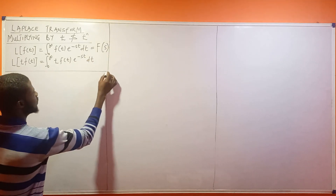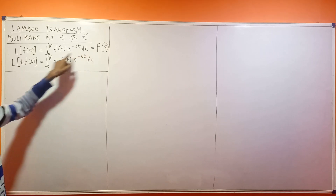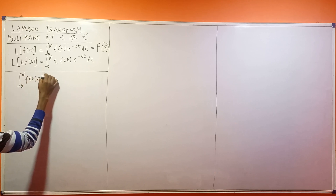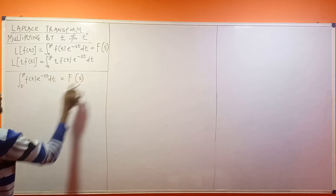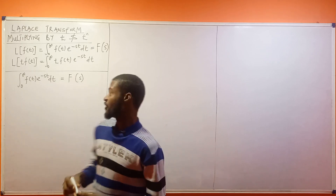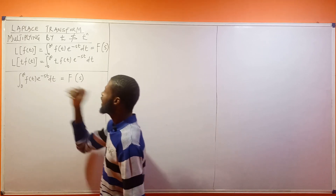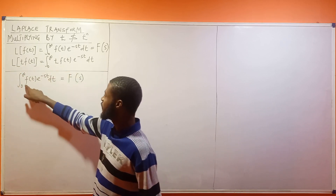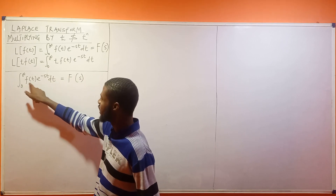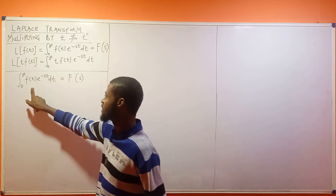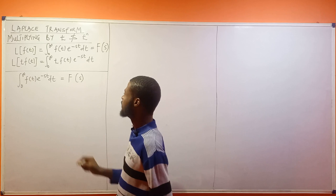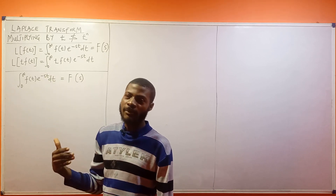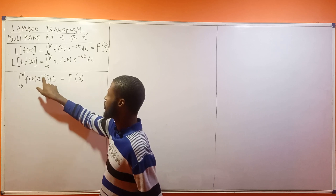Let me rule a line here. We have the integral from zero to infinity of f(t)·e^(−st) dt equal to F(s) — we know this is correct. So what we'll try to do when finding the Laplace transform of t·f(t) is bring out a t from this expression. We need to differentiate in a particular way to get that t out.